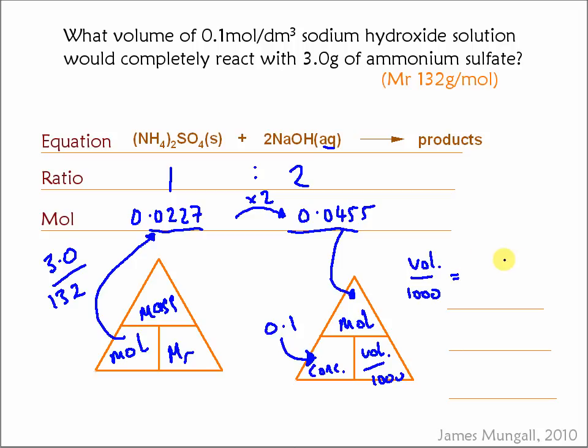is equal to mole divided by concentration, which comes out as 0.455 decimetre cubed, or multiply up by the 1,000 there to get it into centimetres cubed.